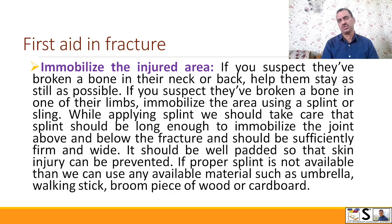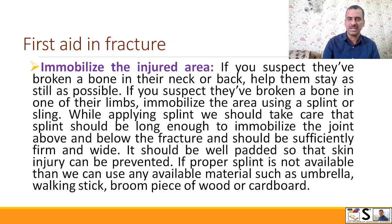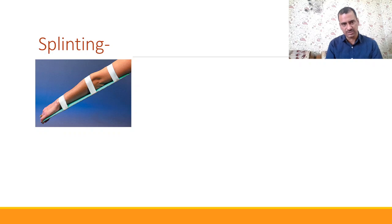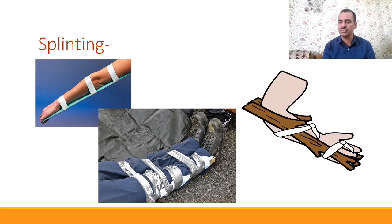While applying a splint, the splint should be long enough to immobilize the joint above and below the fracture, and should be sufficiently firm and wide. It should be well padded so that skin injury can be prevented. If proper splints are not available, we can use any available material such as an umbrella, walking stick, broom, piece of wood, or cardboard — at least we should immobilize the fractured part. Here you can see examples of splints, and how we can also use a body part as a splint.